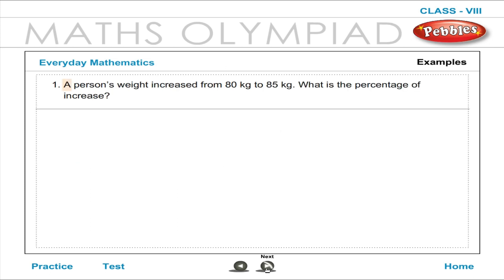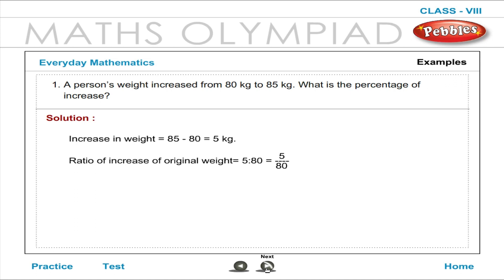Example: A person's weight increased from 80 kg to 85 kg. What is the percentage of increase? Solution: Increase in weight is equal to 85 minus 80 equals 5 kg. Ratio of increase to original weight is equal to 5 is to 80, which is 5 by 80. Percentage of increase equals 5 by 80 into 100, which equals 6.25 percent.